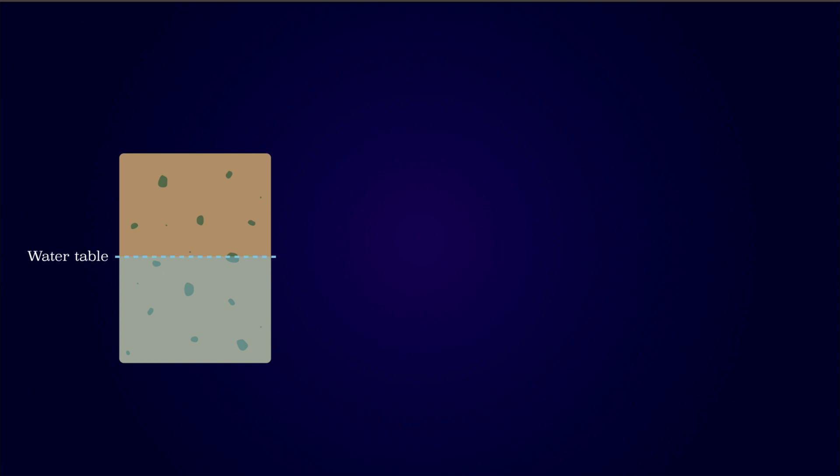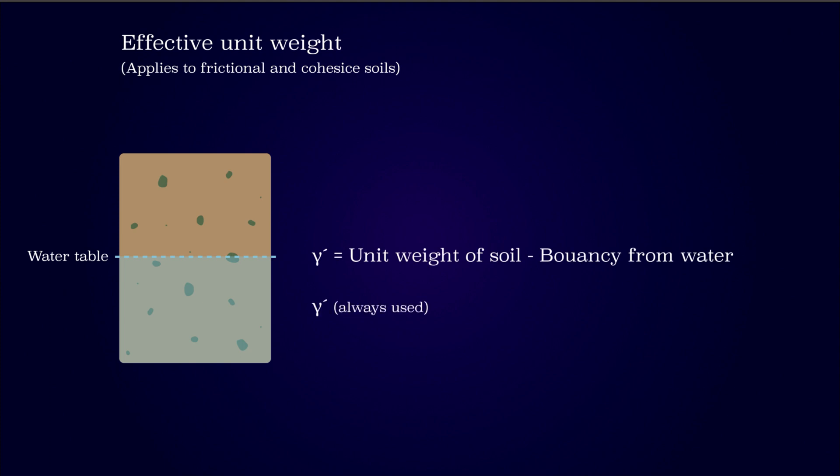Finally, let's consider the effective or buoyant unit weight. This accounts for the soil's unit weight with buoyancy subtracted and is always used below the water table, and never above it. Below the water table, the water yields a buoyant force that opposes the gravitational force from the soil. The effective unit weight is determined by subtracting the buoyancy from the saturated unit weight. The subtraction is never applied on the dry unit weight, since the soil is always saturated below the water table.